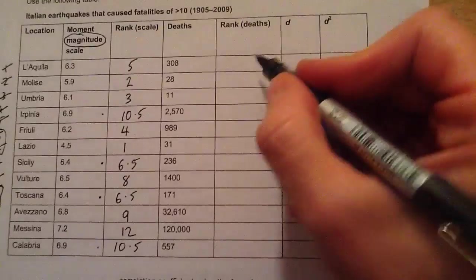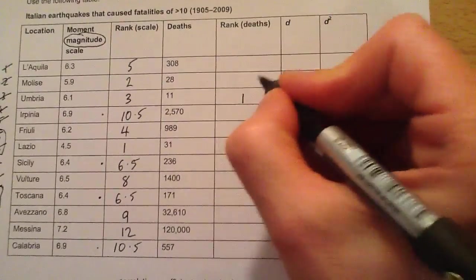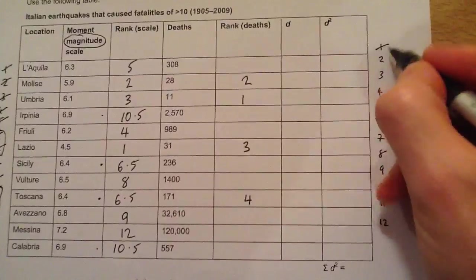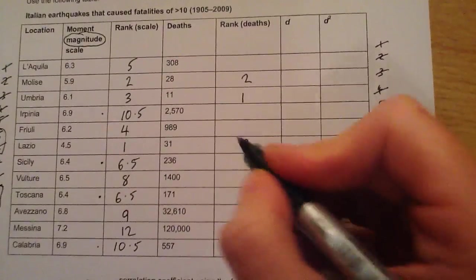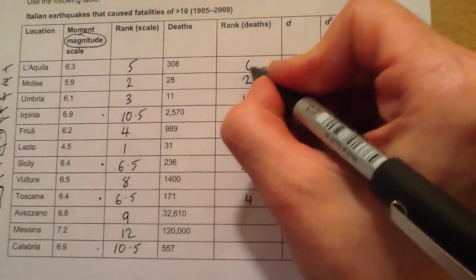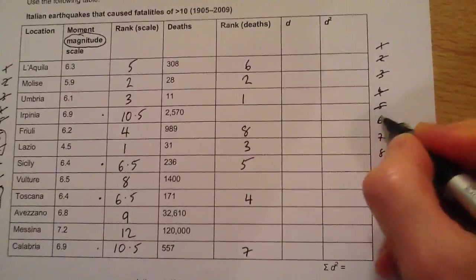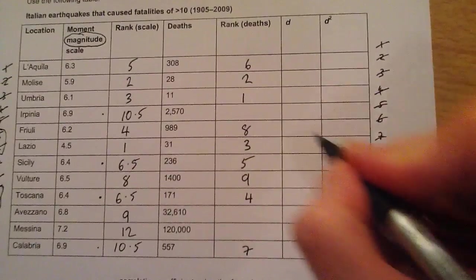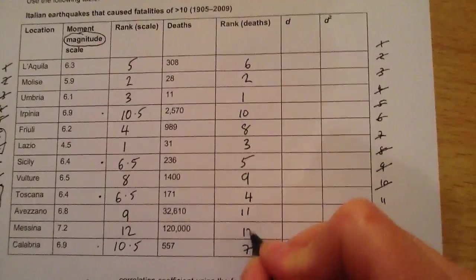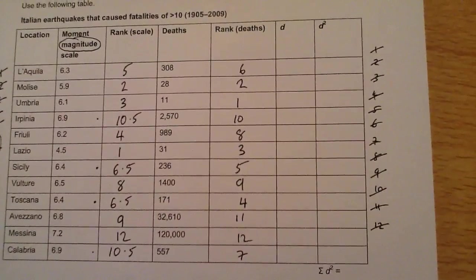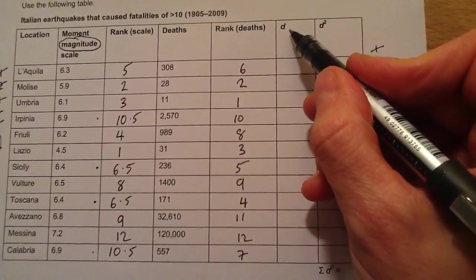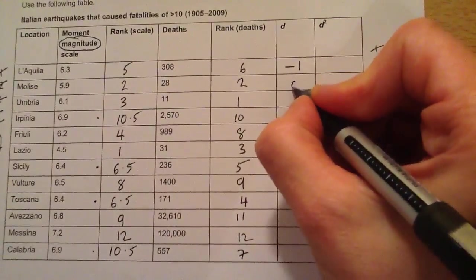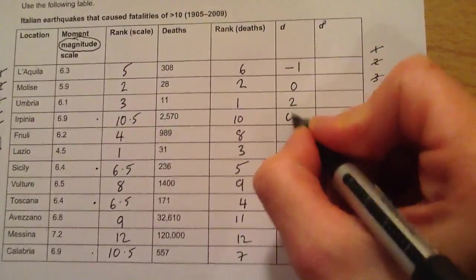I do the same for the deaths column on this side. It looks like there are no tied ranks here, so that's convenient. Now having ranked these two columns, I need to find what D is. D is the difference between the two rank columns. So I say rank one minus rank two for each row — for example, 5 take away 6, 2 take away 2 — and I fill in this column.